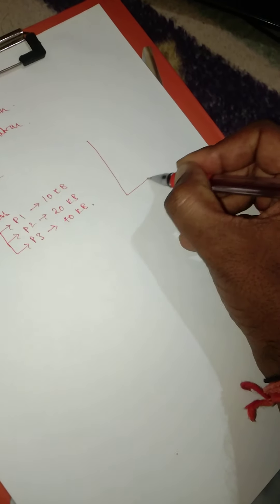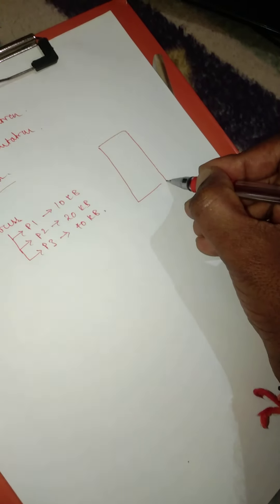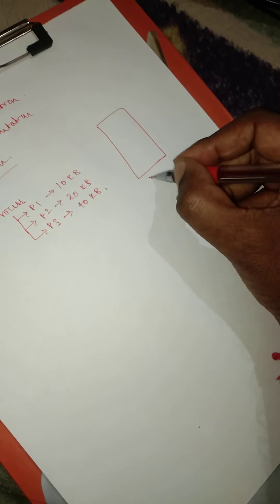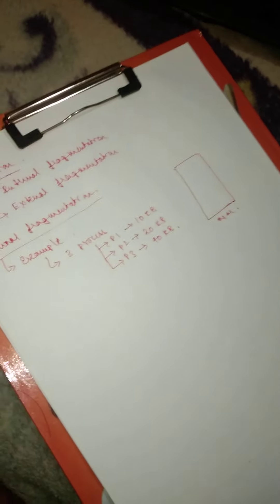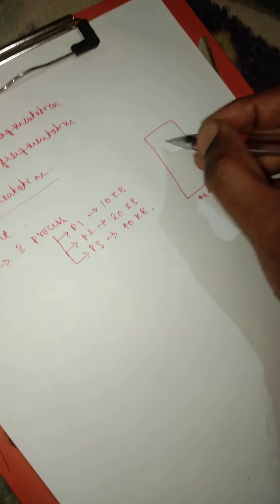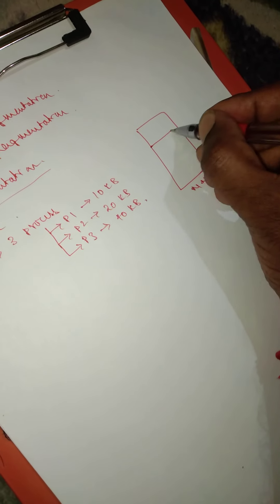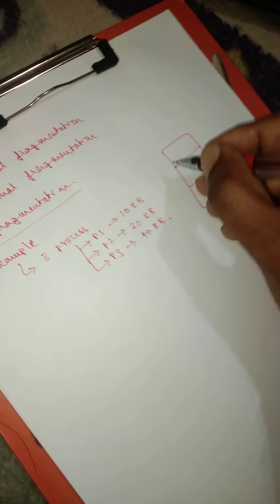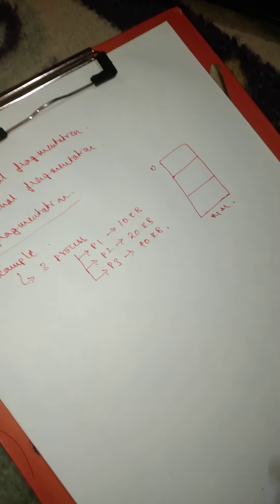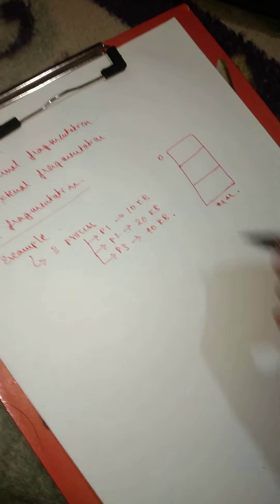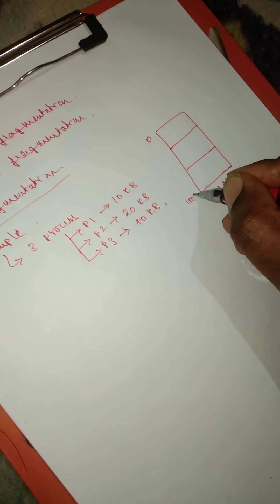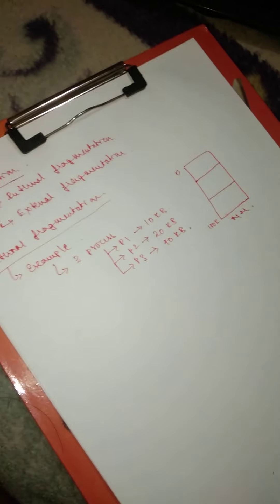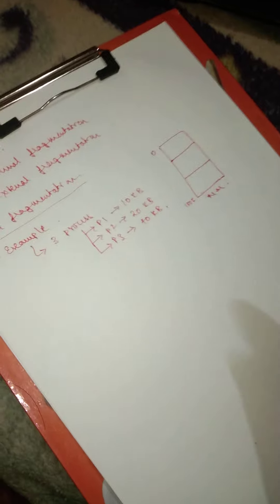If I assume that this is the main memory, then let me assume there are three blocks. This is the fixed size partition, so the size of the memory is 100kb.